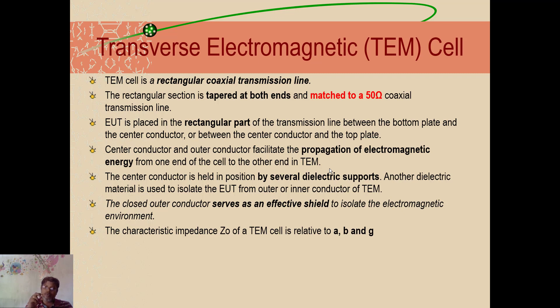And a low permittivity dielectric material is used to isolate the equipment from the outer or inner conductor. So the equipment which you keep there should not be, you can't put it on the floor of the TEM cell. We need some dielectric benches or supports. So on those dielectric supports only, you have to keep the equipment. So that different dielectric supports are used. The closed outer conductor serves as an effective shield to isolate the electromagnetic environment. Outside electromagnetic environment should not come in.